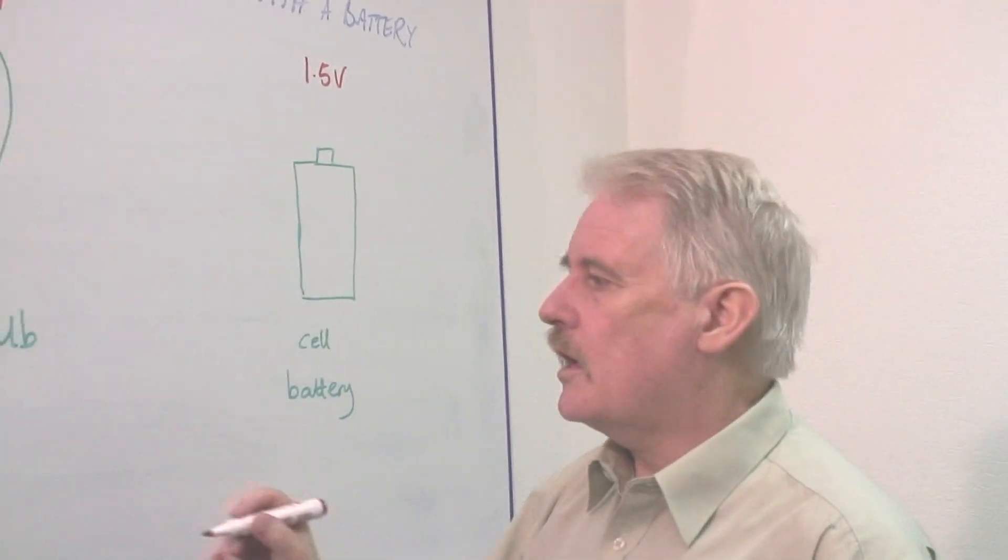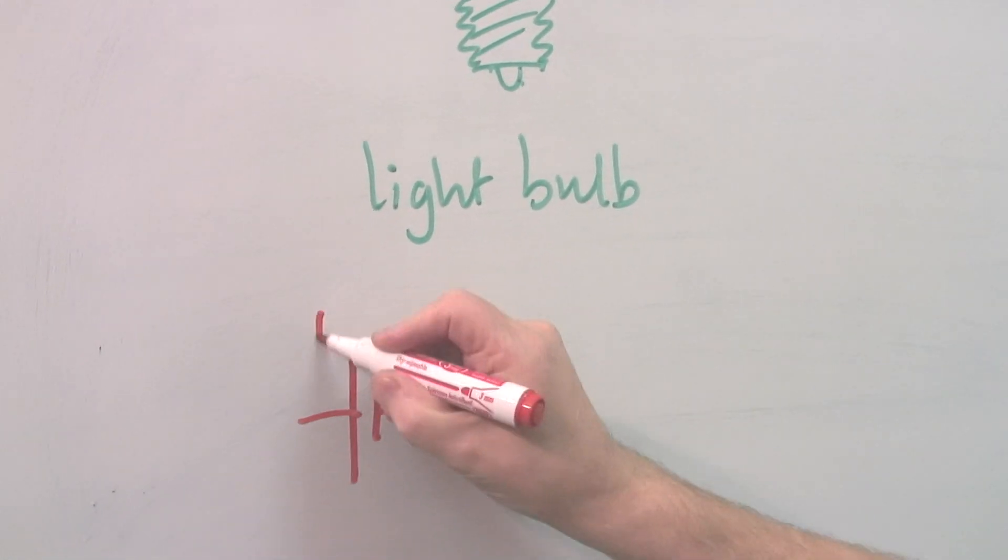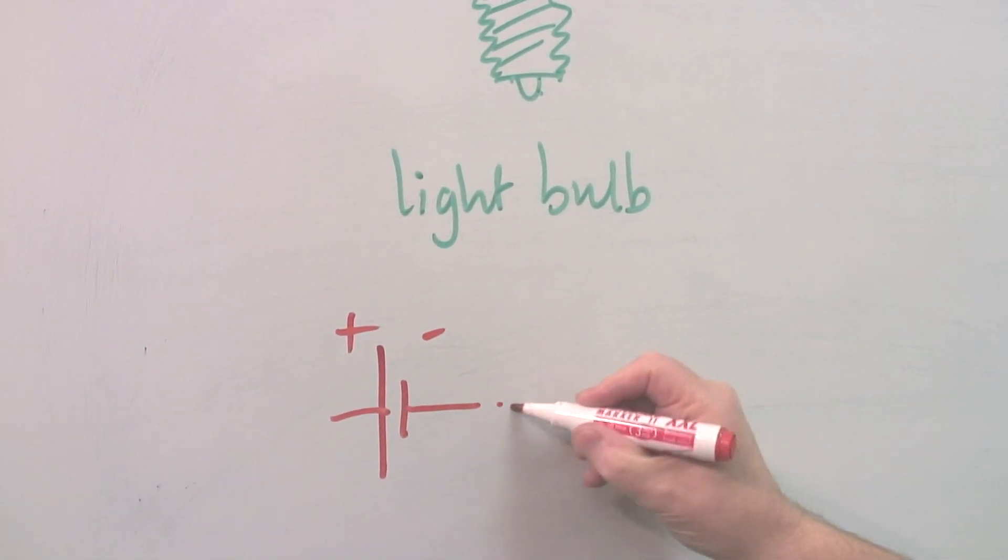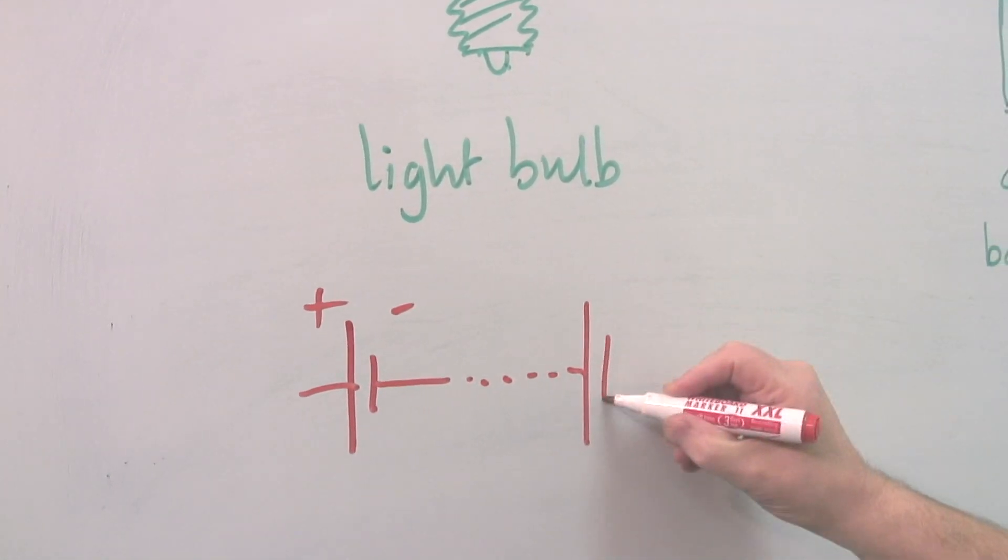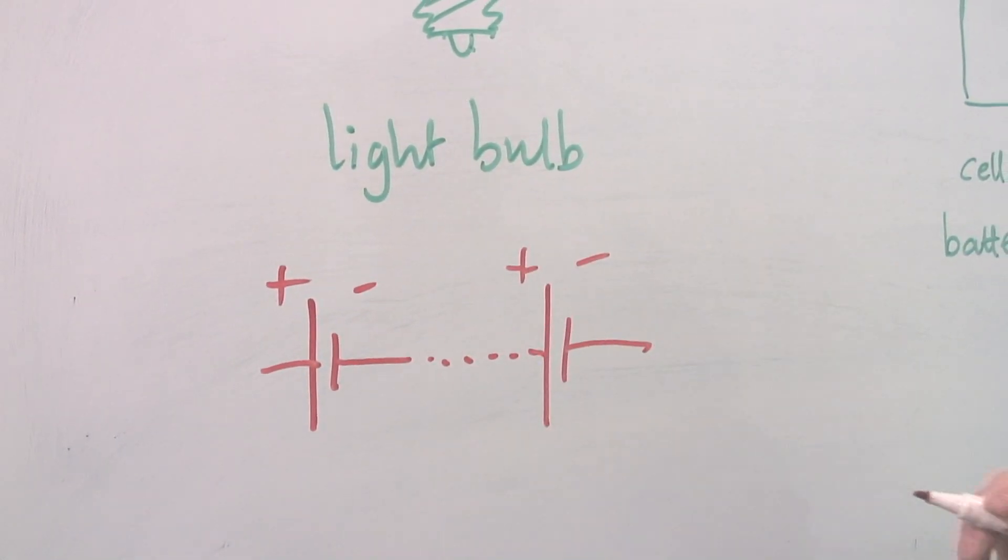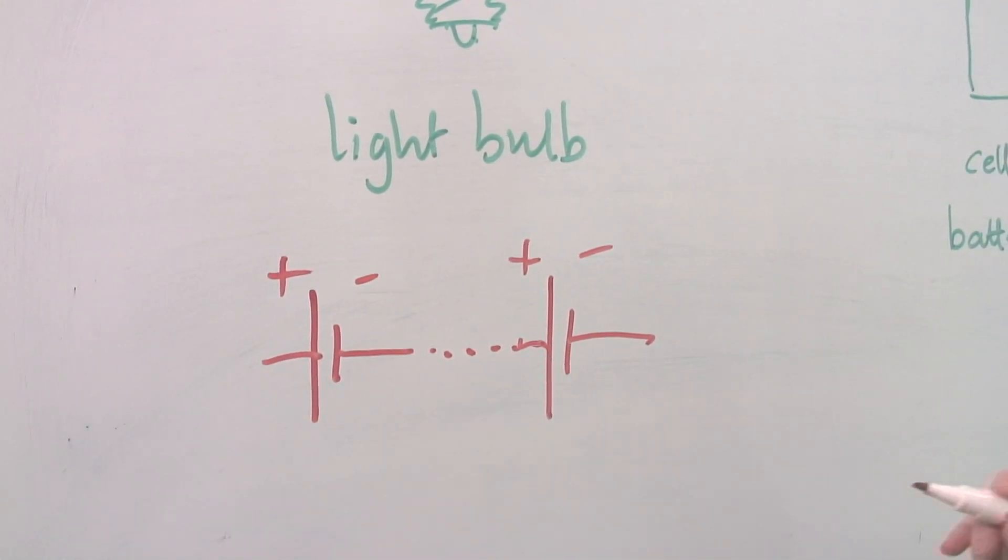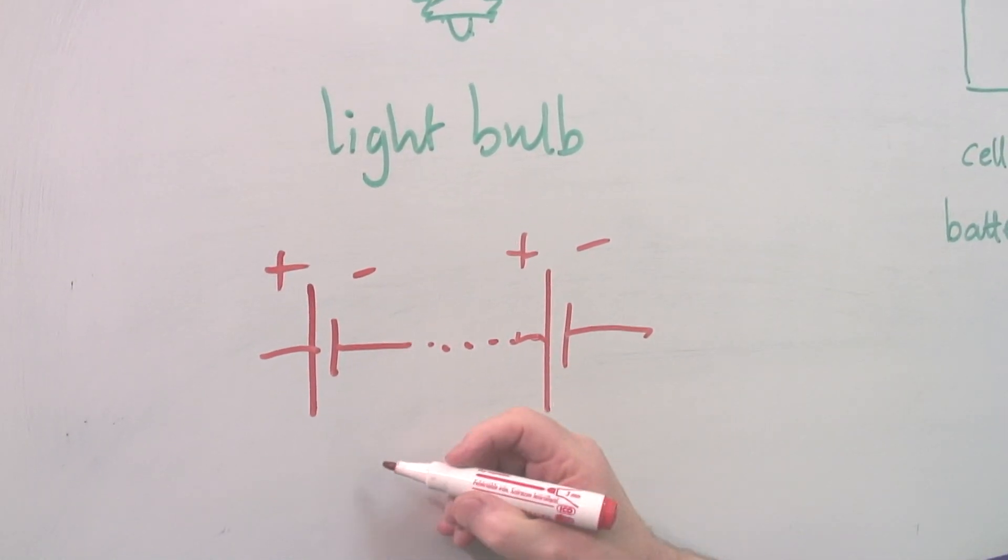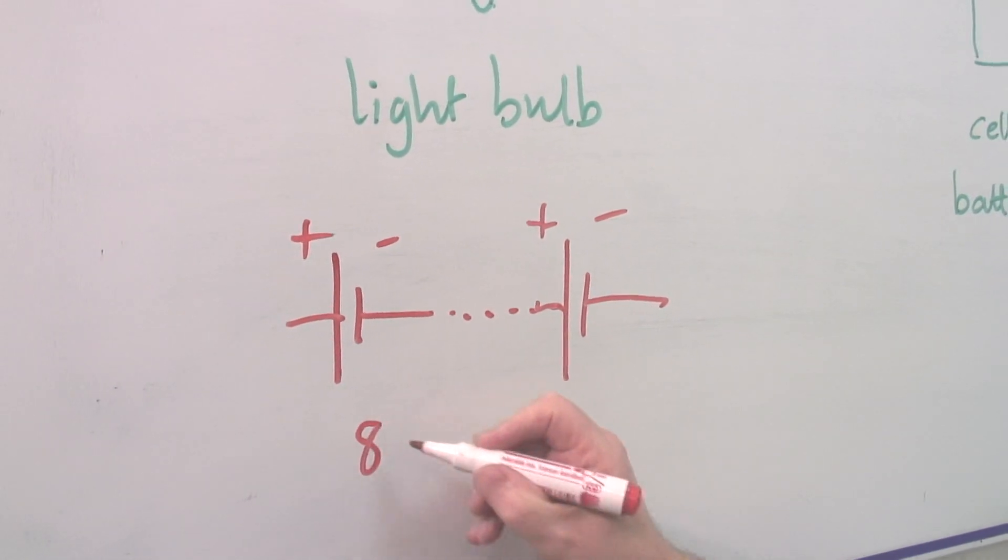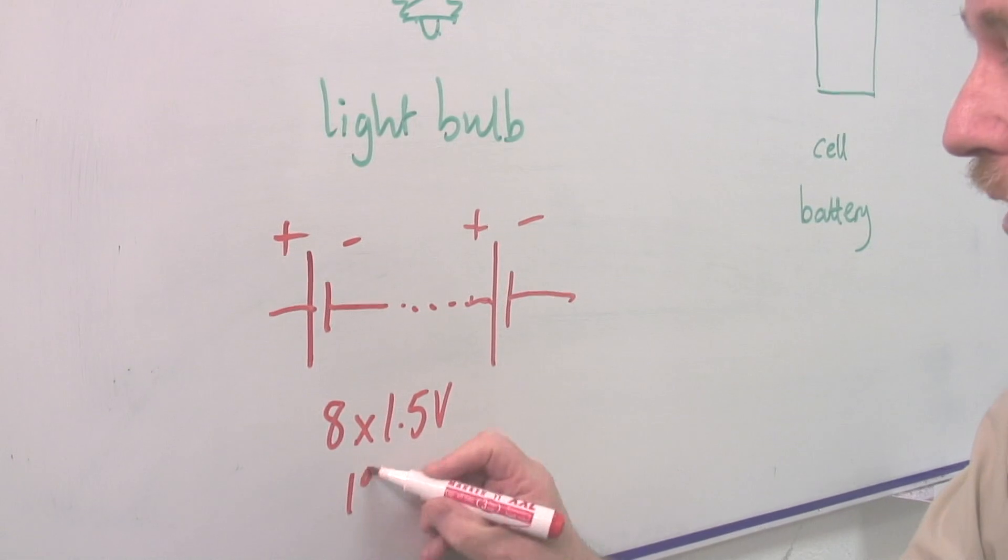What if I took eight of these and attached it to that? Yes, that's okay. If I take eight of these and I attach them so that I've got them all in series, one after the other, I'll end up with a battery. This is what a battery is. And that battery would be eight times one point five volts, which is twelve volts.